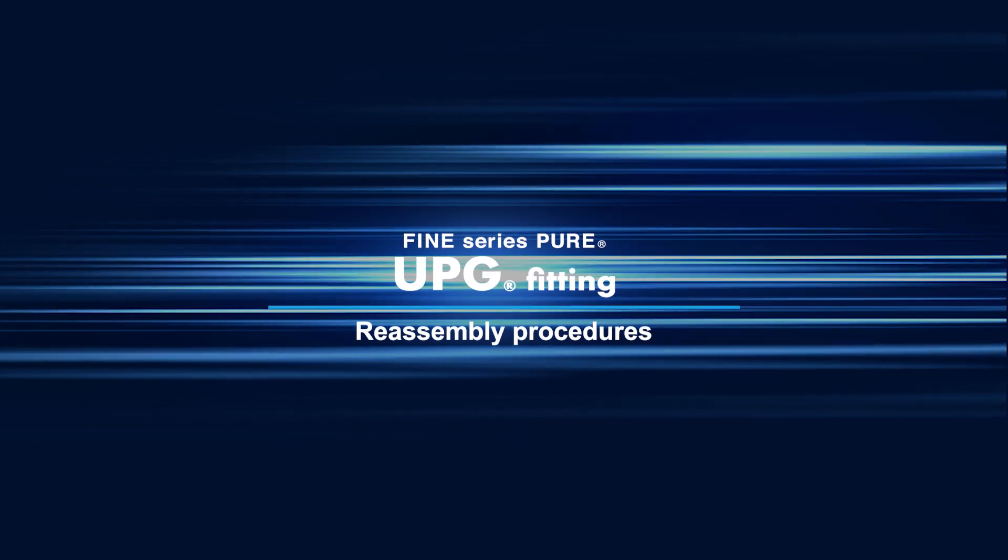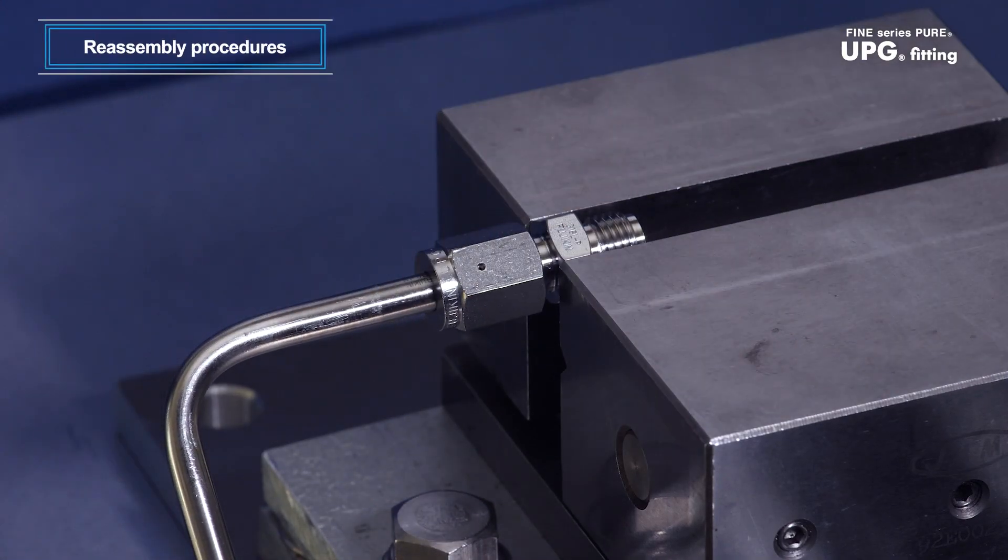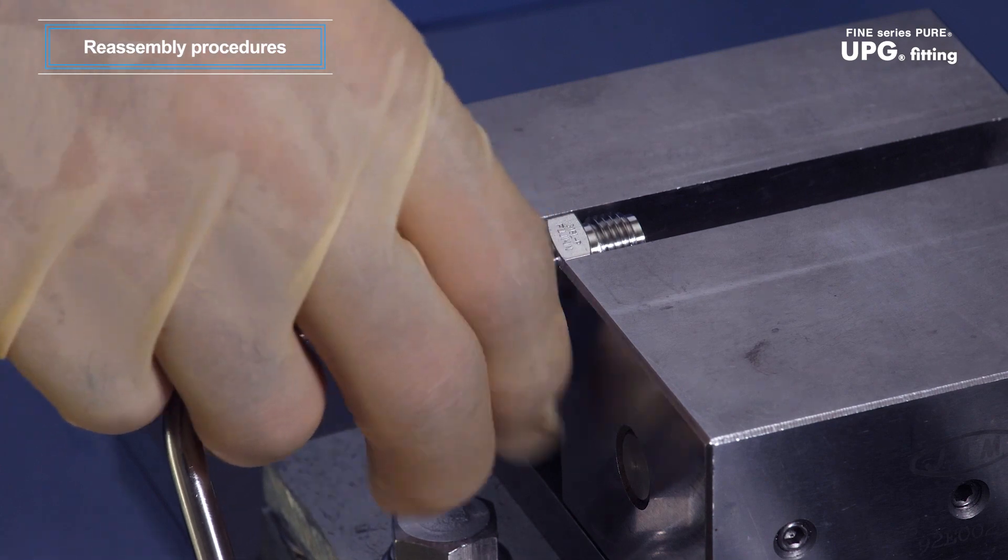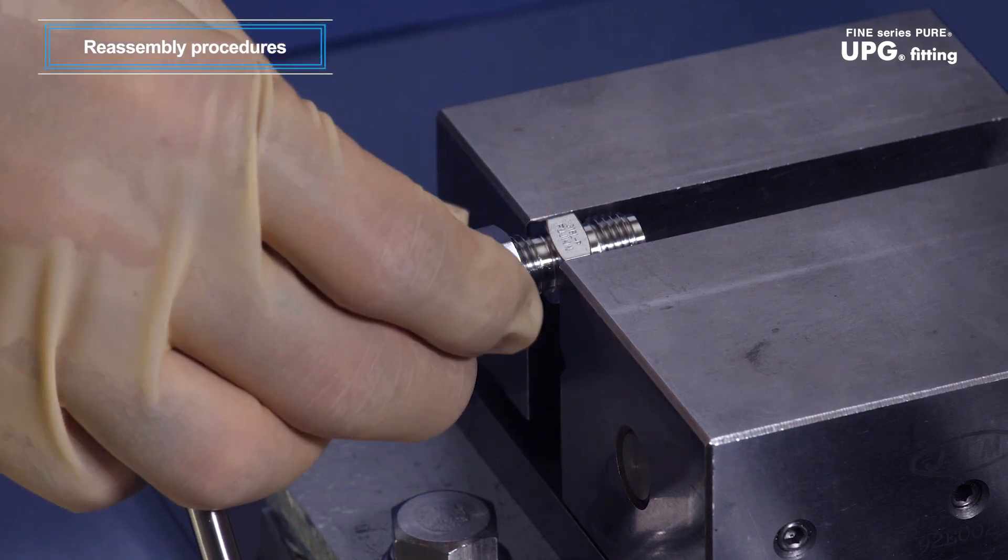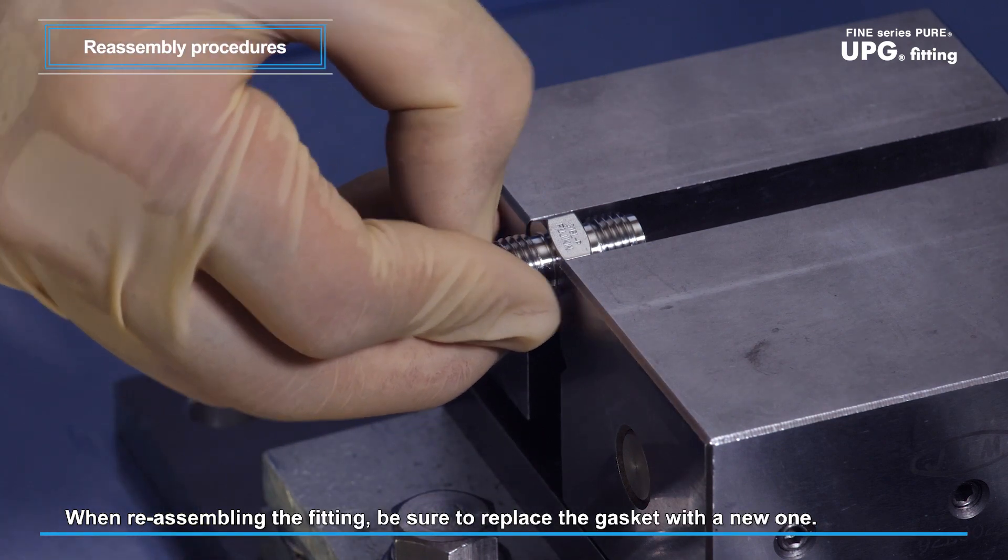Reassembly Procedures: To reassemble the fitting, perform the same procedures as done for assembly. At that time, be sure to replace the gasket with a new one.